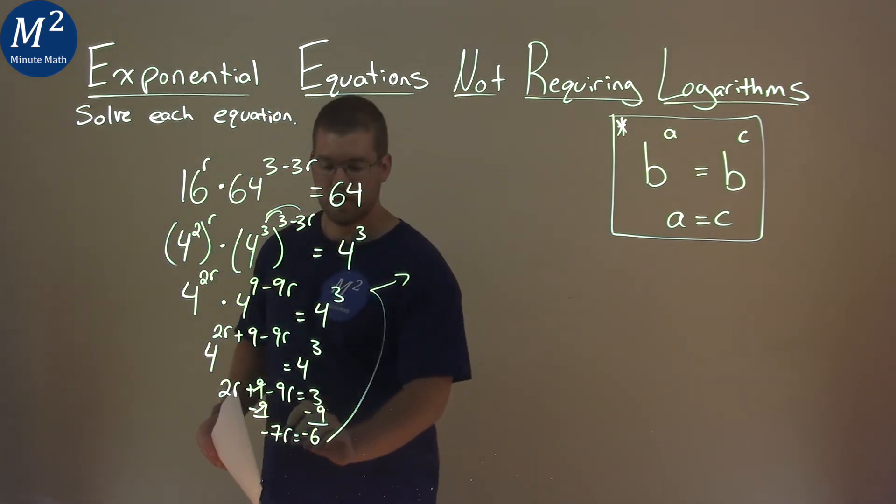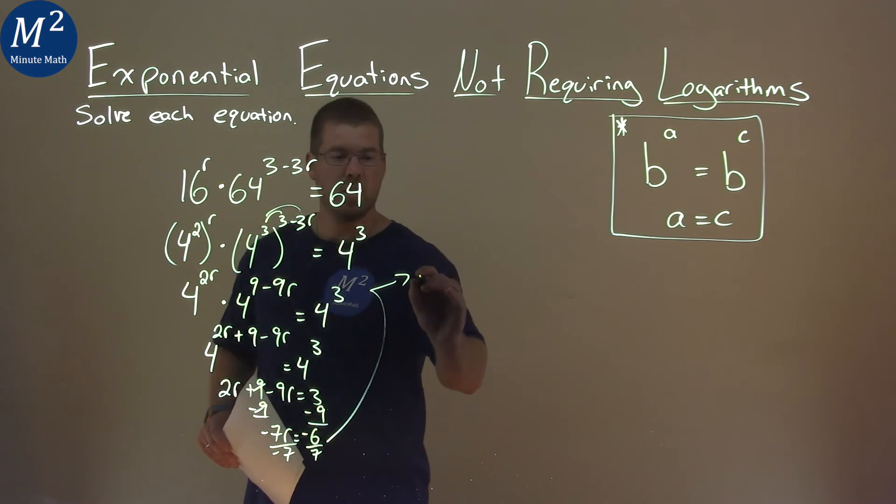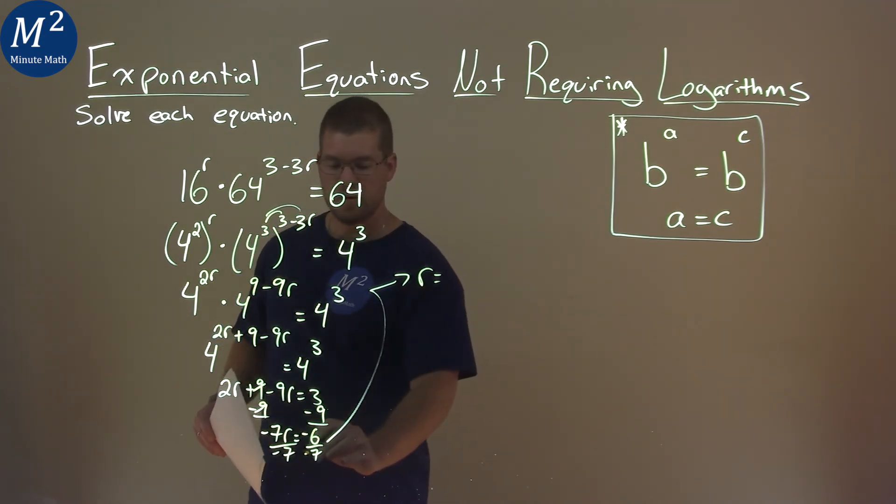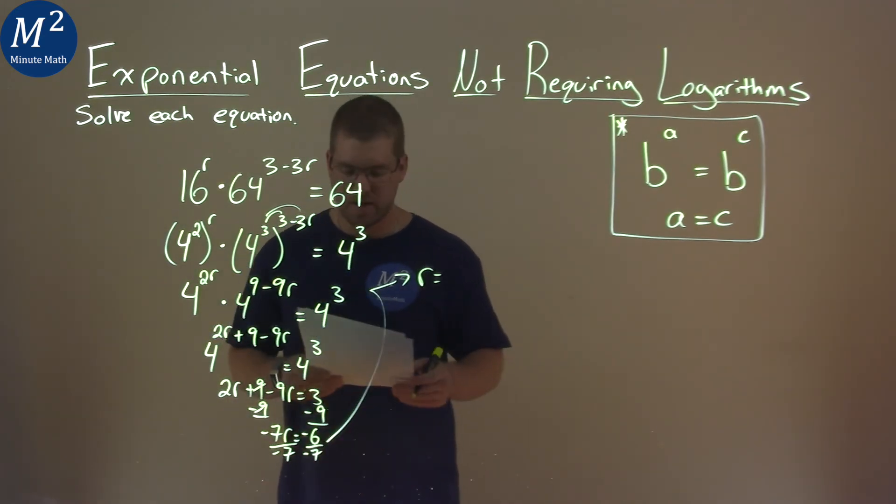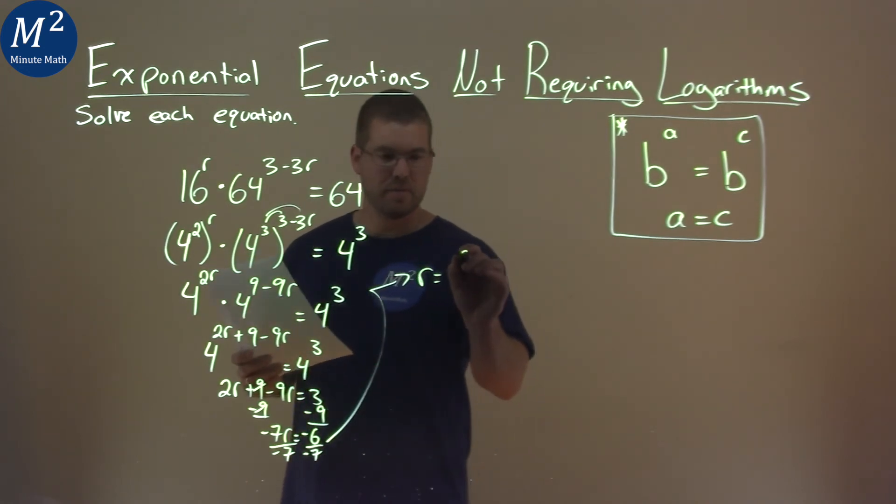Keep on going here. Divide both sides by negative 7, and r is equal to negative 6 divided by negative 7, which is positive 6 over 7.